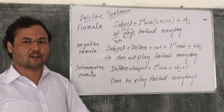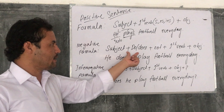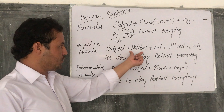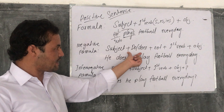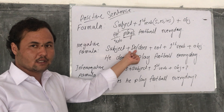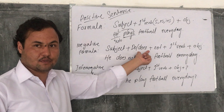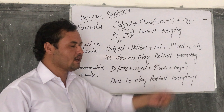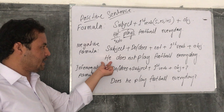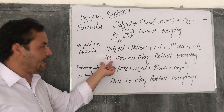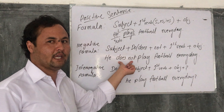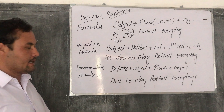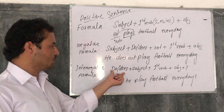For a negative sentence, the formula is: Subject + do/does + not + first form of the verb + object. 'Do' and 'does' are auxiliary verbs used in simple present tense. 'Do' is used for plural subjects and 'does' is used for singular subjects. For example: 'He does not play football.' If the subject is plural: 'They do not play football every day.'